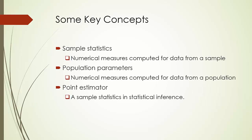Let's first introduce some key concepts. Sample statistics are numerical measures computed for data from a sample. Population parameters, on the other hand, are numerical measures computed for data from a population. In addition, a sample statistic is also called the point estimator of the corresponding population parameter in statistical inference.